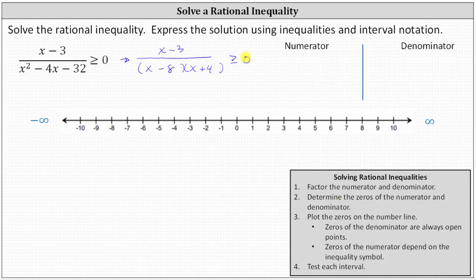Step two: we determine the zeros of the numerator and denominator — the values of x that make the numerator and denominator equal to zero. Now that we have it in factored form, the numerator is equal to zero when x equals positive three. The denominator is equal to zero when x equals positive eight or x equals negative four.